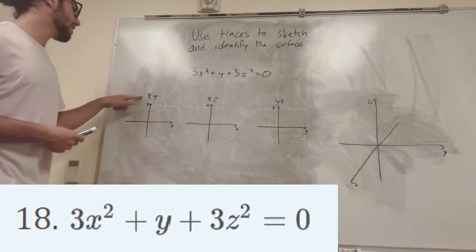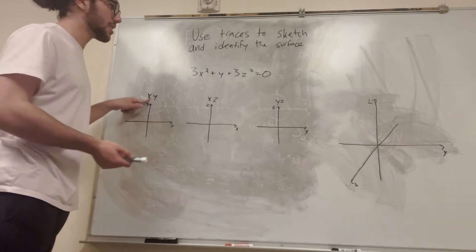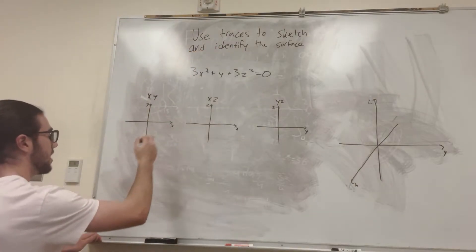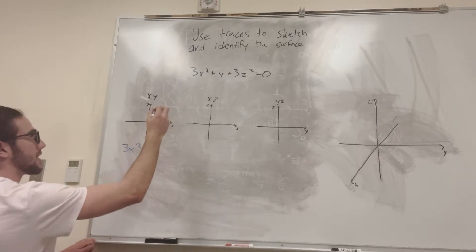And what you can do is say, let's see, let's do the xy plane first. When we have the xy plane, that means that z is equal to zero, and we can actually represent that mathematically by just saying z is equal to zero on this. So it's going to be 3x squared plus y plus 3, zero, because z is equal to zero, is equal to zero.